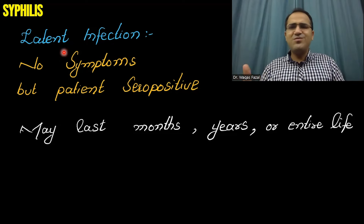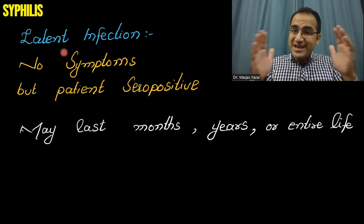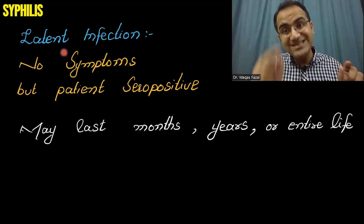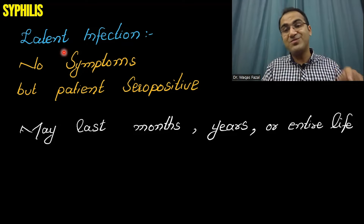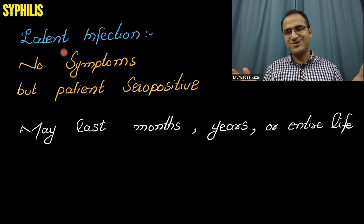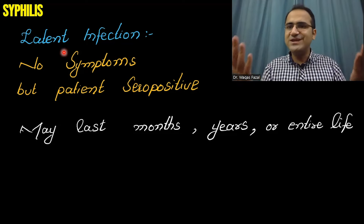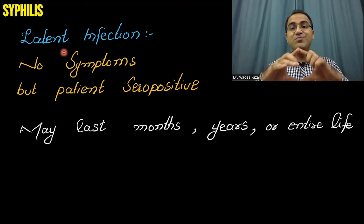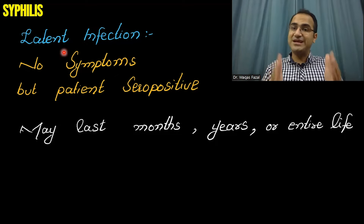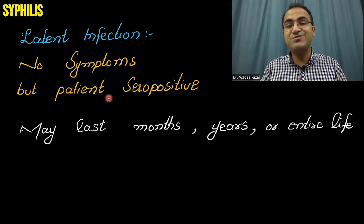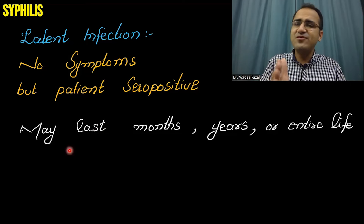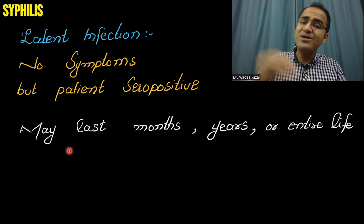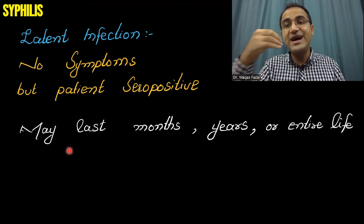After secondary syphilis, patients develop latent infection. In latent infection, the patient has no symptoms — the bacteria is present in the body, but the patient is showing no symptoms. When you perform lab tests, they will show that the patient has syphilis, but the patient is seropositive without symptoms. Latent infection can persist for months, years, or even an entire lifetime; patients may die with the latent infection and never develop symptoms.